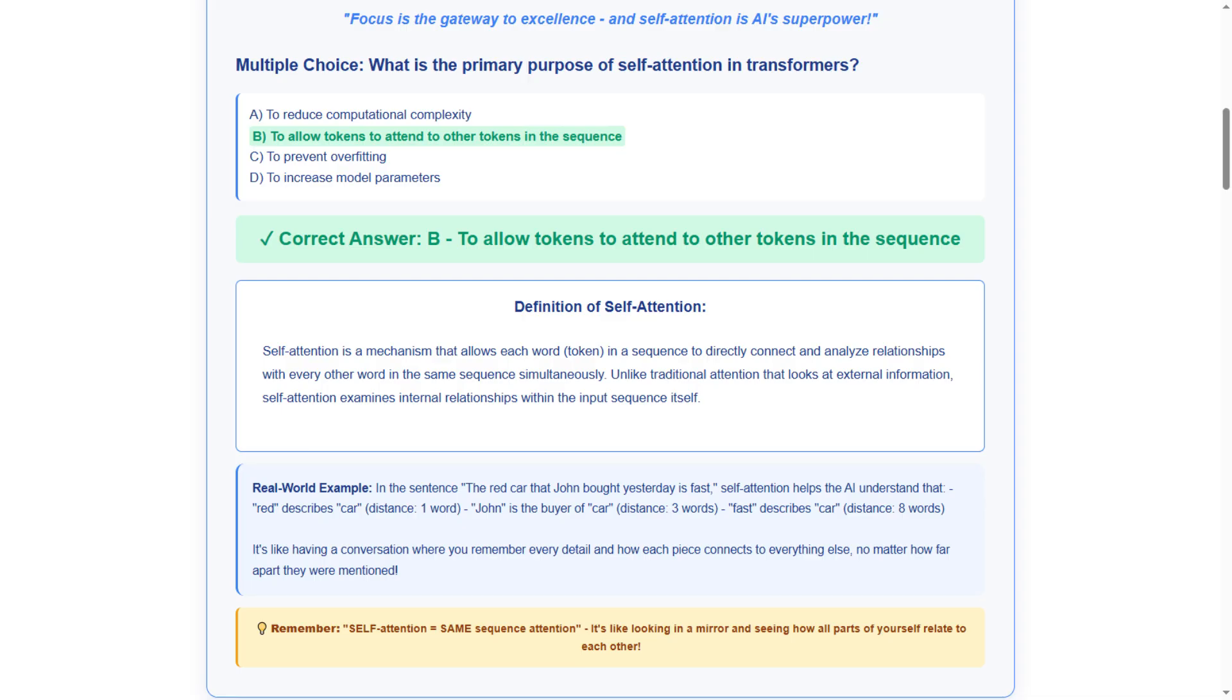The layman explanation shows how in the sentence, the red car that John bought yesterday is fast, self-attention helps AI understand that red describes car, John is the buyer and fast describes the car, regardless of word distance. In essence, it's like perfect conversational memory.